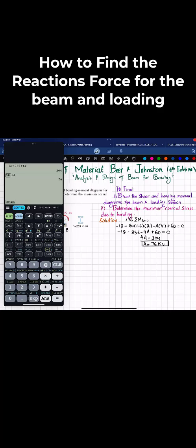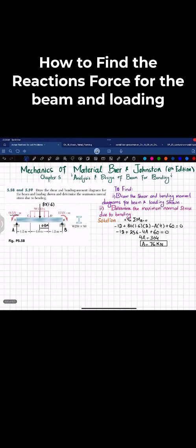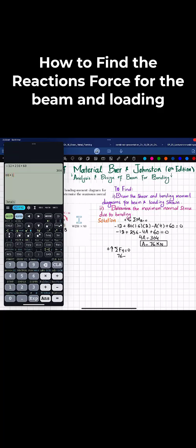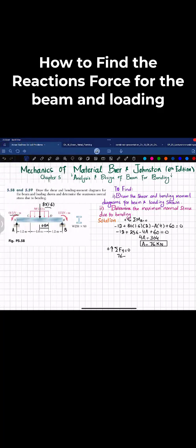Now we'll calculate B using another equation of equilibrium: sum of all forces along y-direction equals zero, with upward force taken as positive. So A, which is upward, 76 minus 80 times 1.6, which is 128 kilonewtons, plus B equals zero.